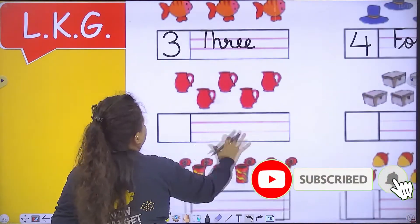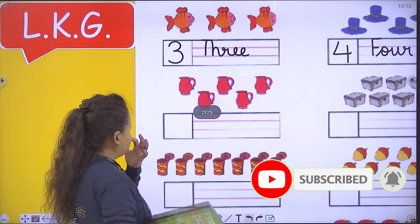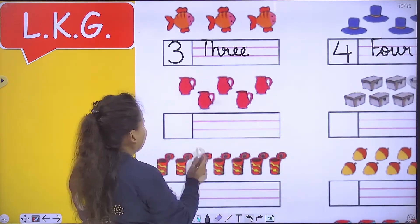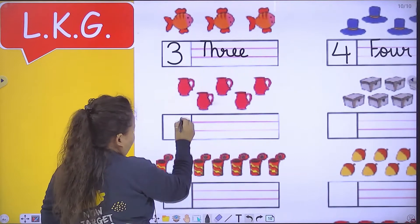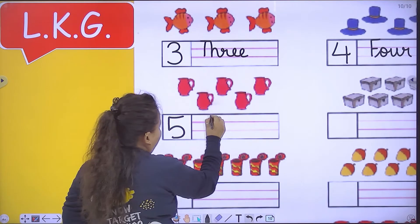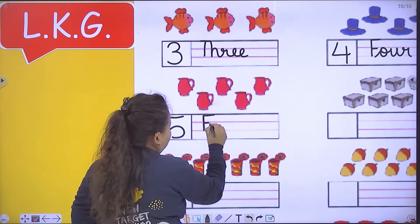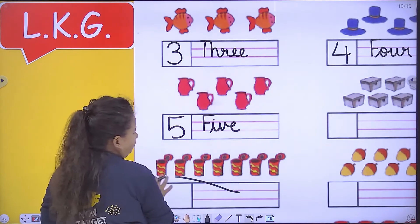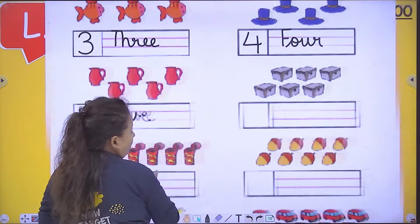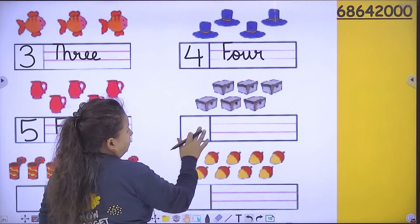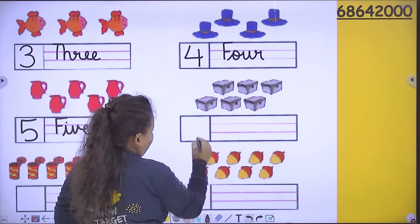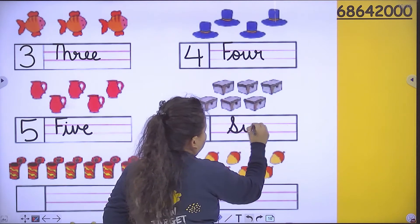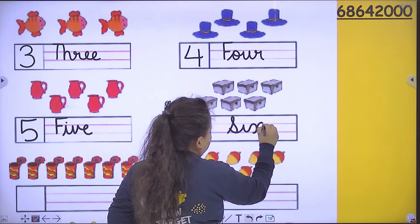Next, the number of objects is five. One, two, three, four, five. Five — F I V E, five. Six — S I X, six.